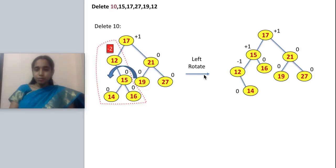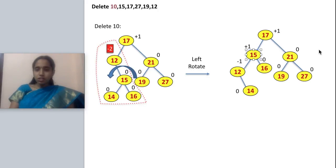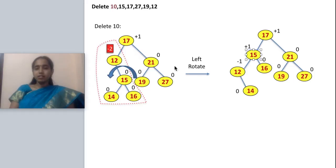I am making a left rotation between P and P1, that is between 12 and 15. After rotation, 15 comes up, 12 becomes the left child of 15, and since 14 was already there, 14 becomes the right child of 12. This is the tree after rotation.